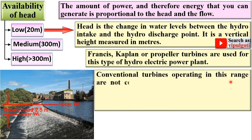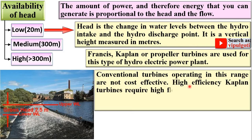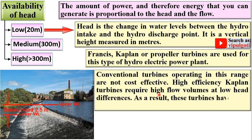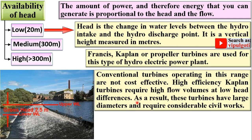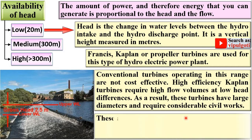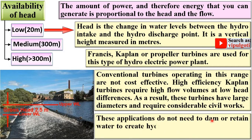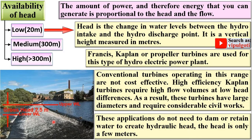Conventional turbines operating in this range are not cost effective. High efficiency Kaplan turbines require high flow volume at low head differences. As a result, these turbines have large diameter and require considerable civil works. These applications do not need a dam to create hydraulic head — since the head is only a few meters, a dam is not required.